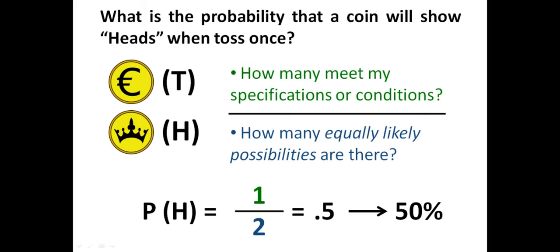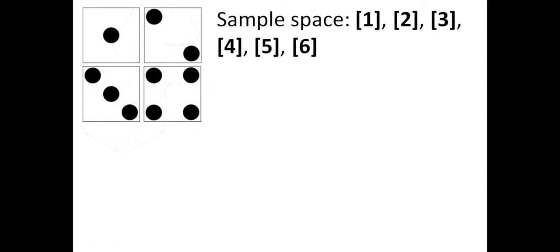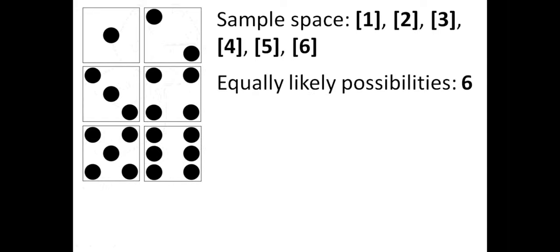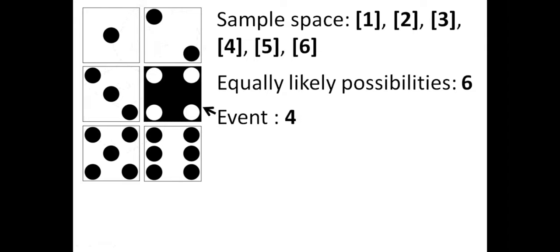Another typical example that helps us understand some of the basic concepts of probability is the case of rolling a dice. We know that a dice has six sides, so our sample space is going to be each of the sides. And let's say that we are interested in the probability of obtaining a number 4. So, applying our probability formula, we have six equally likely possibilities: 1, 2, 3, 4, 5, 6, and of those only one corresponds to our condition, which is that of obtaining a number 4.